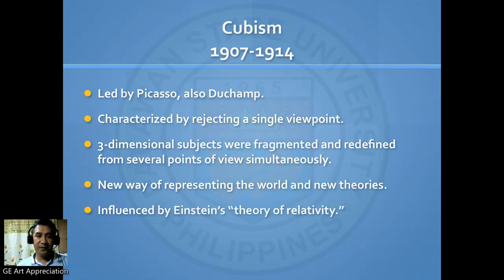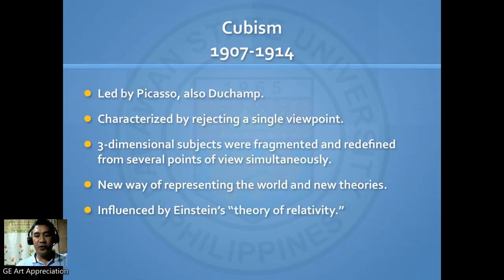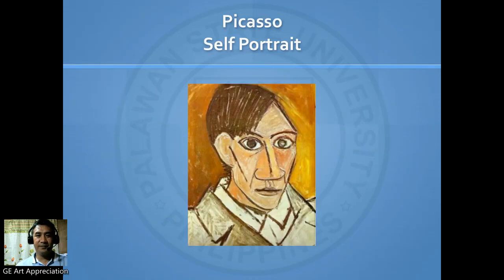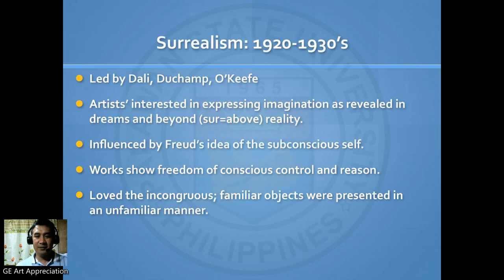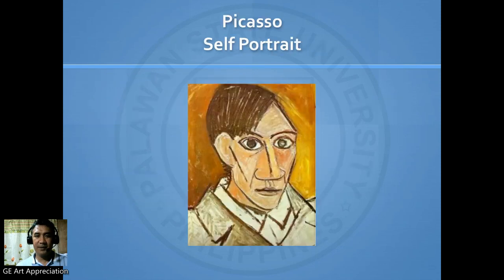Cubism developed during 1907 to 1914. It is led by Picasso and Duchamp, characterized by rejecting a single viewpoint. It is influenced by Einstein's theory of relativity. We also have Picasso's self-portrait.